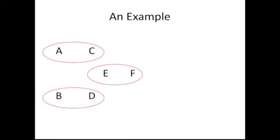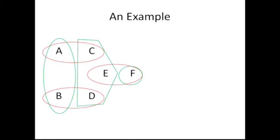We can also think about the green player, who has a different kind of partition over the state space. If the green player receives a particular signal, they know for sure the state is F. Otherwise there are still elements of uncertainty — there are possibilities of various things being the case, but not necessarily certainty.